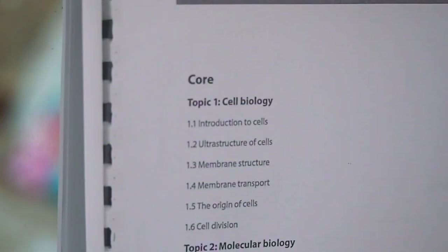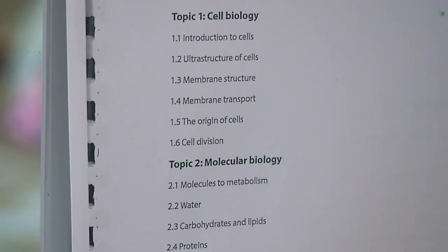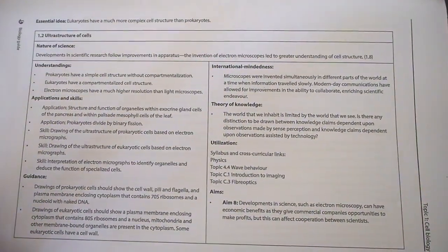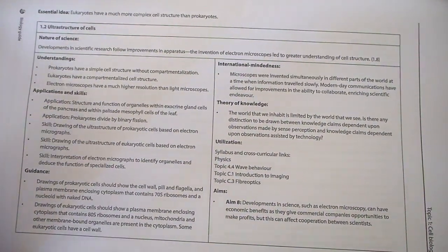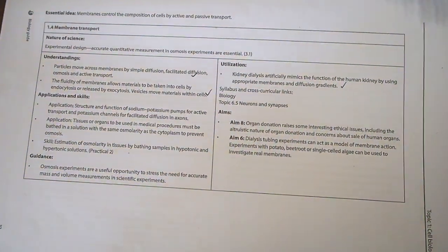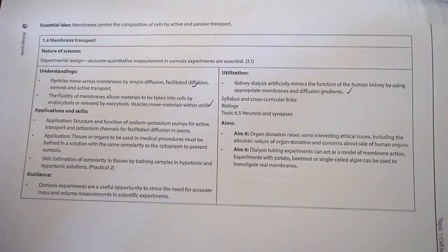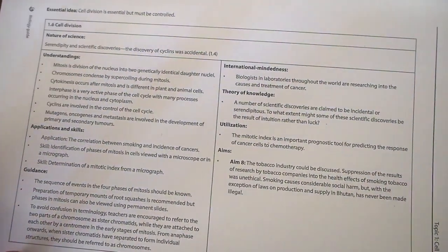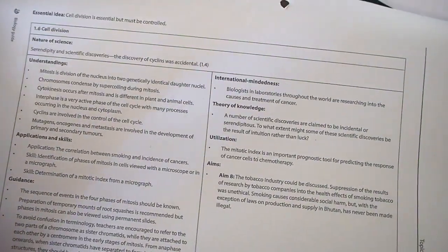Out of all of the IB subjects that I studied, IB biology by far has the best syllabus. I say that because it's really in depth in terms of covering all of the chapters, but also each individual dot point in the syllabus is very descriptive in terms of what you need to know. So basically, as you read each of the dot points in the syllabus, that's telling you what you need to know for the final exams.